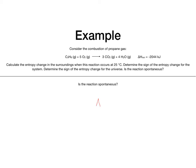Is this reaction spontaneous? Delta S of the universe is greater than zero, a positive value, which means the entropy of the universe is increasing. Based upon the second law of thermodynamics, if the entropy of the universe increases, then the reaction is spontaneous. Therefore, the reaction is spontaneous. In our next video, we're going to start figuring out how to combine entropy and enthalpy into the Gibbs free energy, which will help us further predict the spontaneity of reactions.